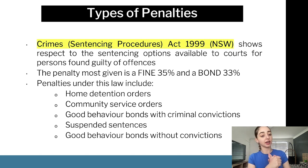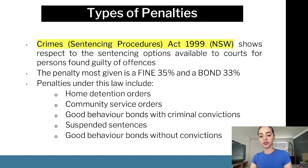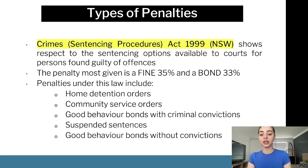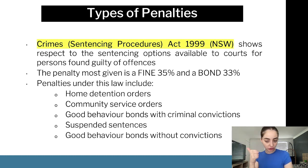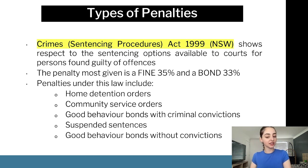The Crime Sentencing Procedure Act 1999 governs the sentencing options available to courts for persons found guilty of offenses, so all those basically exist under that piece of legislation. The penalty given most is a fine at 35% and a bond at 33%. Penalties under this law include home detention orders, community service orders, good behaviour bonds with criminal convictions, suspended sentences, and good behaviour bonds without convictions.